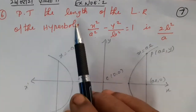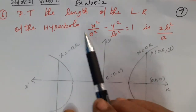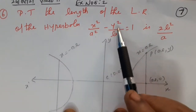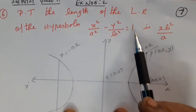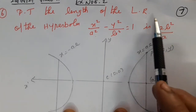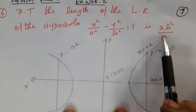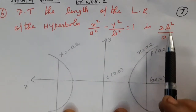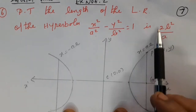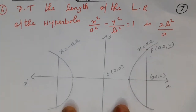Prove that the length of the latus rectum of the hyperbola x²/a² − y²/b² = 1 is 2b²/a. We memorize that one: the length of the latus rectum is 2b²/a. This result is what we are going to prove.